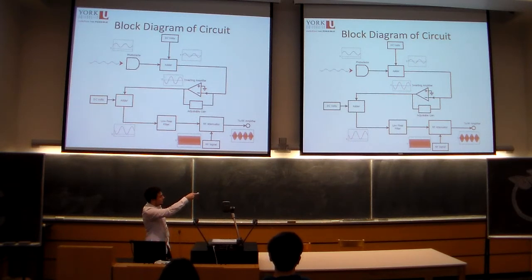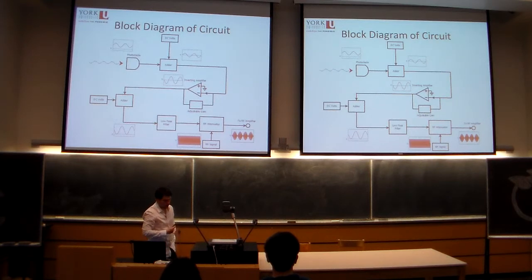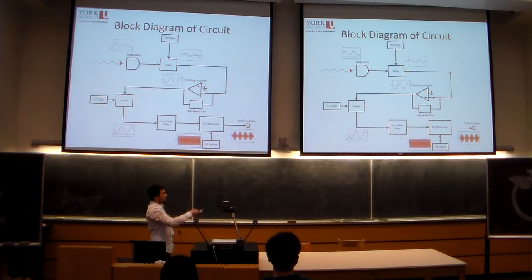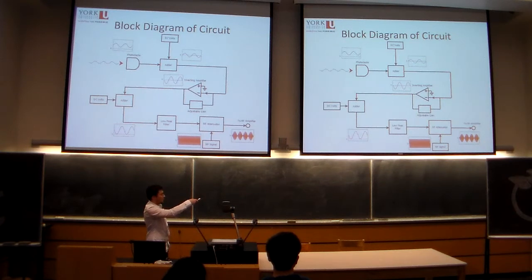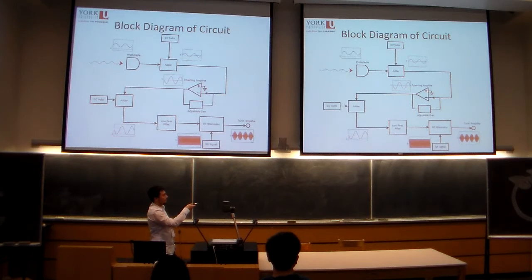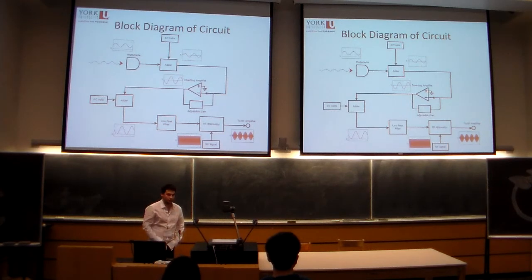We then amplify and invert the signal with adjustable gain so we can choose the amount of feedback we want to employ. And we then add another DC offset to this right there so that our signal is always positive.